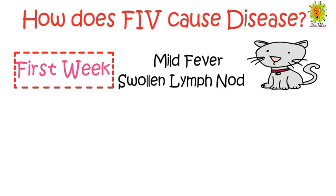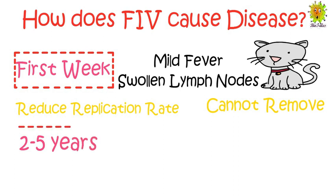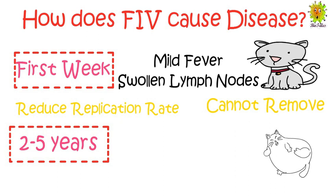Within the first week of infection, mild symptoms like fever and swollen lymph nodes appear due to replication of the virus. These symptoms are usually very mild and not easily noticed. In response to the infection, the immune system develops a response that helps reduce viral replication, but is unable to remove it completely. In some infected cats, after two to five years, viral replication increases and the cat starts developing signs of disease.